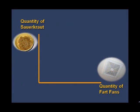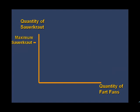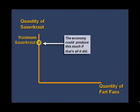The production possibilities curve is a graph that depicts all the possible combinations of sauerkraut and fart fans that could be produced. Since our resources are limited and technology is fixed in the near term, our choices are limited. If we devoted all of our resources to sauerkraut production, we could produce a maximum amount of sauerkraut, but we'd have no fart fans.